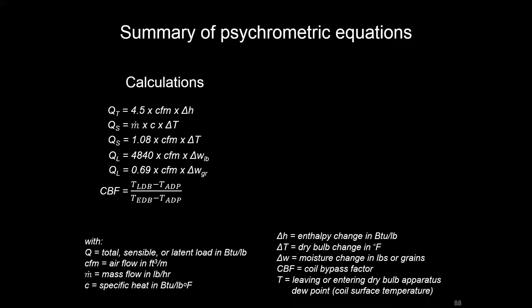I've broken out the mass flow version, really where all these come from for the Q sub S, and we're going to go into that in detail in a moment. But there's two for Q sub L that I put here, one for the change in humidity ratio, which is in pounds of water per pound of dry air. There's the change in the grains, or we may be looking at the grains of moisture. And then also there's that CBF, which stands for coil bypass factor.